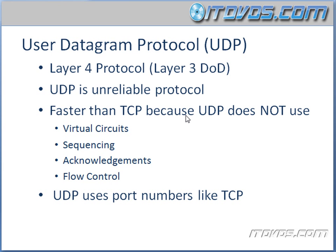Let's go back to our file transfer example. Why would we want to use UDP with some sort of file transfer? Well, if the upper-level protocol handles any issues associated with virtual circuits, sequencing, acknowledgments, and flow control, then we wouldn't want to be redundantly handling that with TCP. NFS — network file system — is a good example of this. It's been around for a long time and it handles these issues, so we don't want to be redundant and have a lot of overhead with TCP.